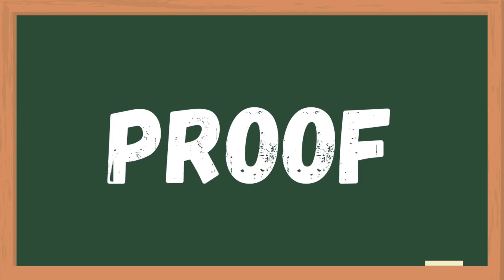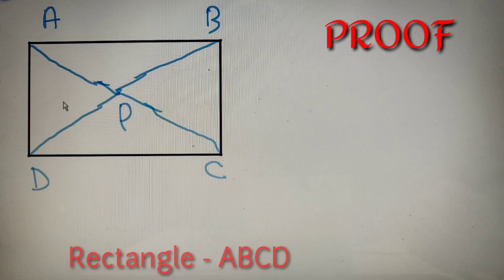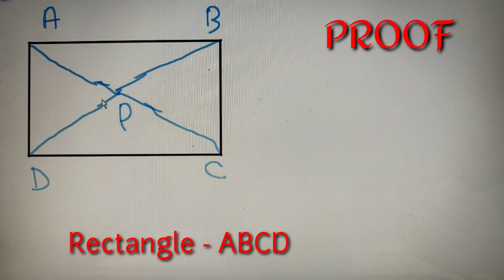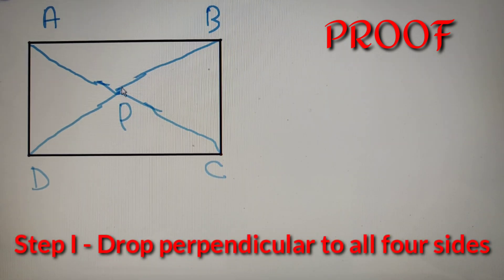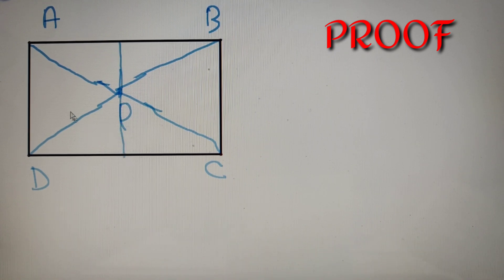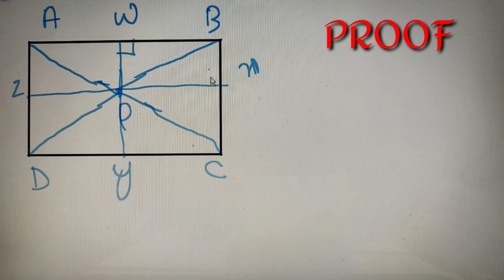For proving the theorem, let's take a rectangle ABCD and a point P inside the rectangle, joining all the points AP, PB, PC, and PD. Our first step is dropping perpendiculars to all four sides of the rectangle. After dropping these perpendiculars, we get a shape with intersection points named W, X, Y, and Z respectively, and since these lines are perpendicular, all these angles are 90 degrees.